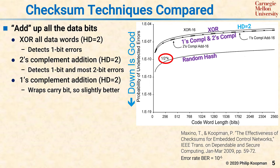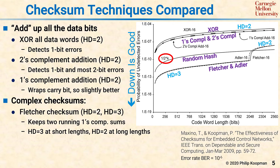There are a couple of complex checksums — a Fletcher checksum and an Adler checksum — that are more complicated but still rely on addition as their primary function. A Fletcher checksum keeps not one running addition across the data word, but two running additions. For a 16-bit Fletcher checksum, it would keep one 8-bit counter which simply adds all the bytes as it sees them, and a second 8-bit counter that adds up the values in the first 8-bit counter. It turns out that the interaction between these two additions gives you better performance at short word lengths. In fact, it will get you Hamming distance 3 up to a certain breakpoint just under 2k bits for a 16-bit value.